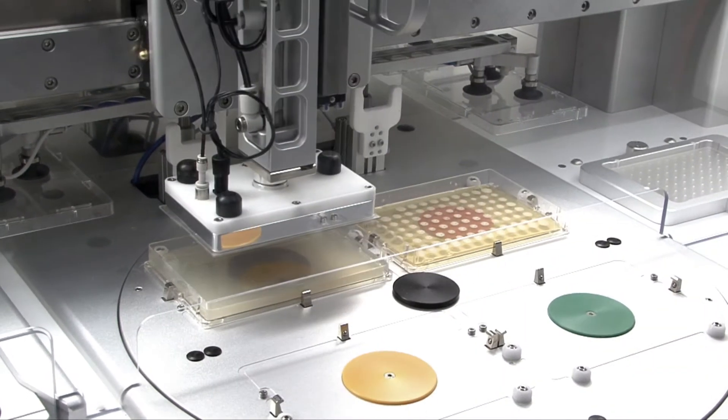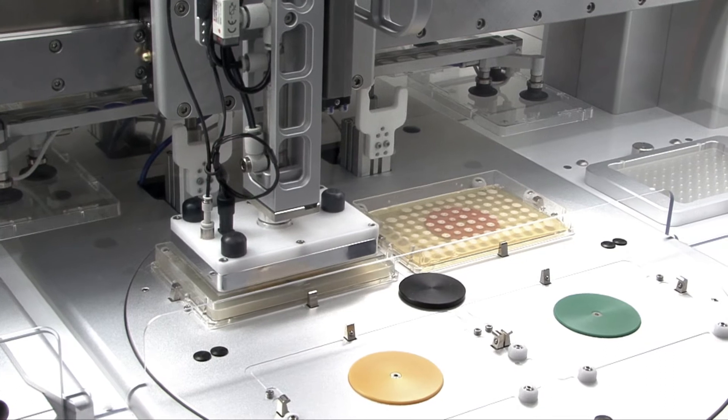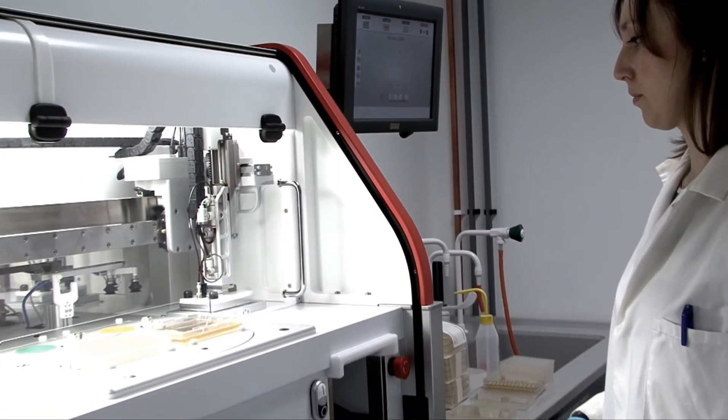We were doing that all by hand which meant either pipetting or using replicators which aren't as accurate and it also took us a lot longer and took up a lot more bench space to do. It takes a lot of time and a lot of effort to do even a couple of conditions and screen the, we've got 700 mutants, so to screen 700 mutants on a single condition is 7 plates and that's without doing any replicates.